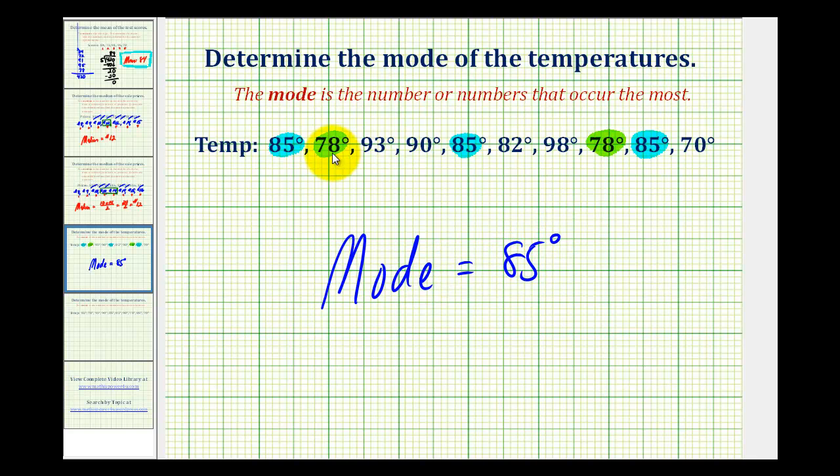We would not include 78 degrees because that only occurs twice, and 85 degrees occurs more. Now it is possible to have more than one mode, so let's take a look at a second example.